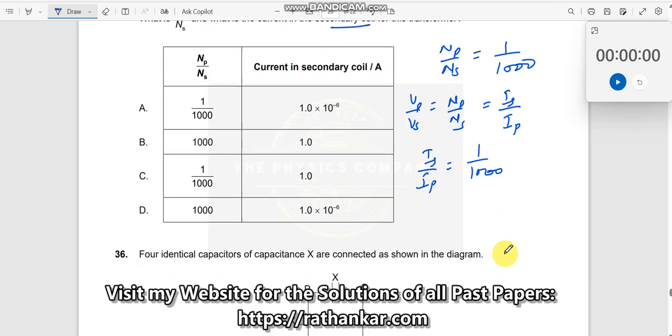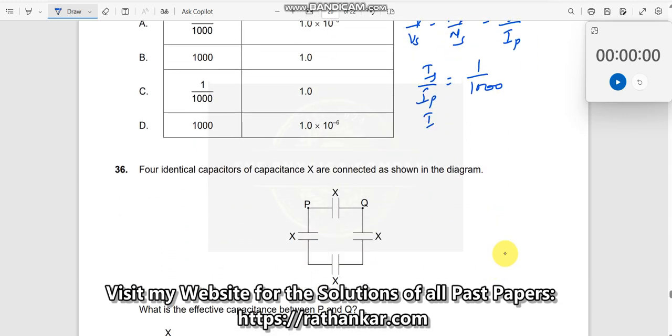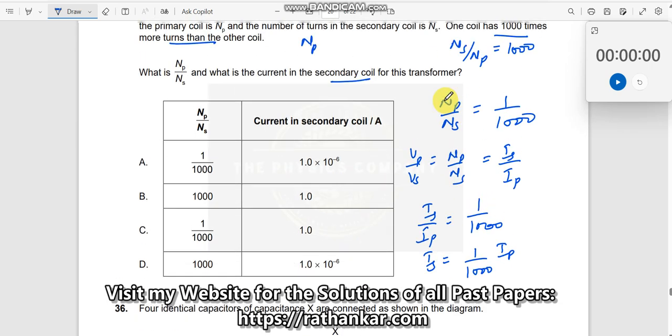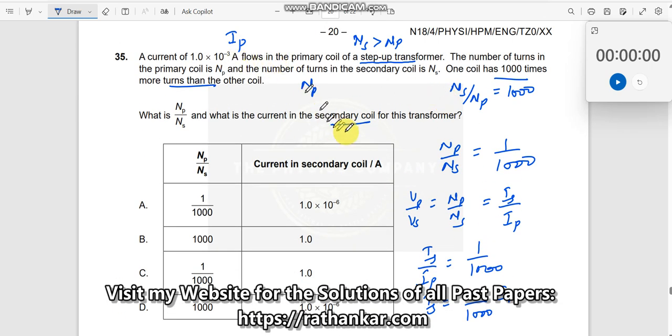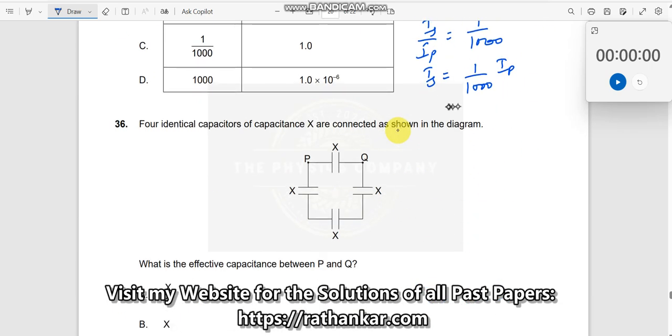Now, what is the value of IP? IP value is 10 power minus 3 amperes. So let us substitute that. I get this as 1 by 1000 into 10 to the power of minus 3, which would be equal to 10 power minus 6 amperes.